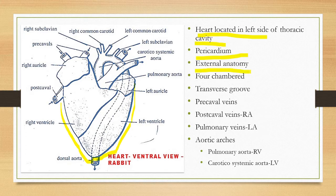The external anatomy shows a four-chambered heart with two auricles and two ventricles. The left auricle and right auricle are separated by a transverse groove. This transverse groove separates the auricles from the ventricles.